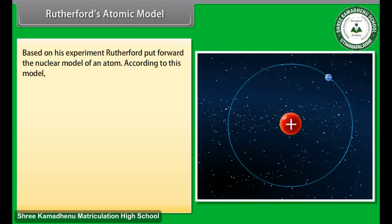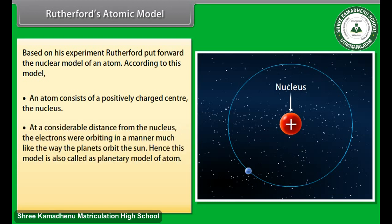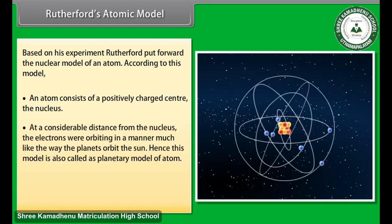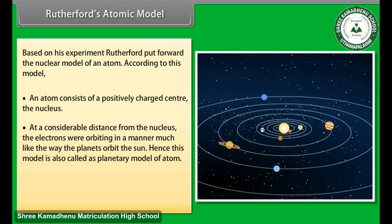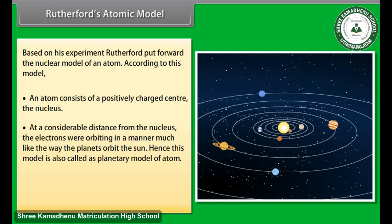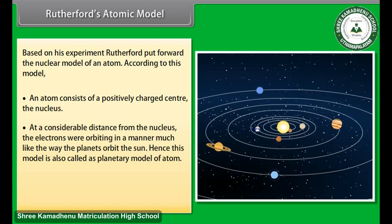Rutherford's Atomic Model. Based on his experiment, Rutherford put forward the nuclear model of an atom. According to this model, an atom consists of a positively charged center, the nucleus. At a considerable distance from the nucleus, the electrons were orbiting in a manner much like the way the planets orbit the sun. Hence, this model is also called as planetary model of atom.